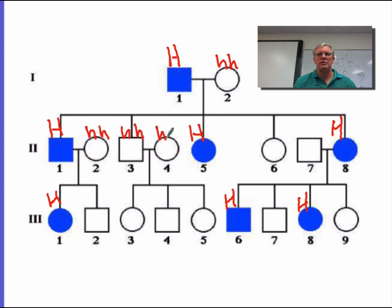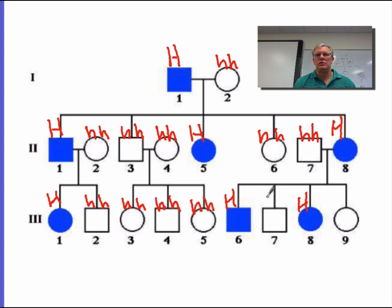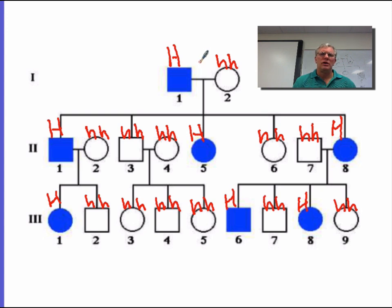So let's go around and fill in every person that does not have the disorder. They have to be little h, little h. If they had a big H, then they would have the disorder. So we have a whole bunch of information already, just knowing that this is a dominant transmitted disorder. So how can we figure out these blanks? Sometimes you can and sometimes you can't.